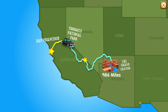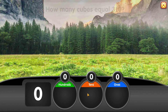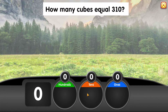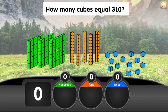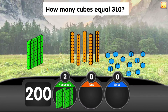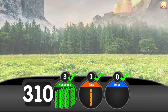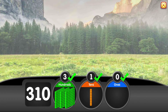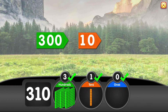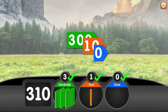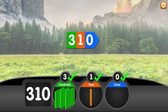Our next stop is 310 miles away. How many cubes equal 310? 300 plus 10 plus 0 equals 310.